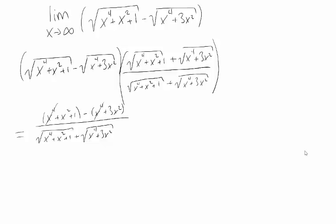These x to the fourths go away, and these x squareds, I have an x squared minus 3x squared, so that gives me minus 2x squared plus 1, and the denominator stays the same.